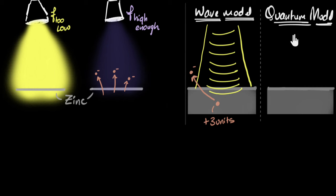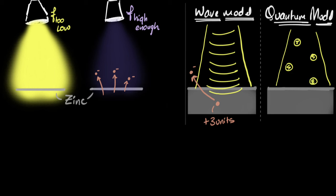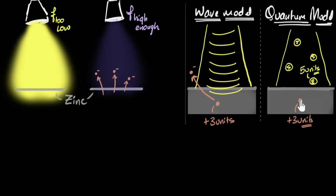The quantum model says light is not made of waves — it's made of photons. When an electron absorbs a photon, the same electron needing three units of energy now receives, say, five units instantly. It doesn't go plus one, plus two, plus three, plus four, and then plus five — it instantly goes plus five.